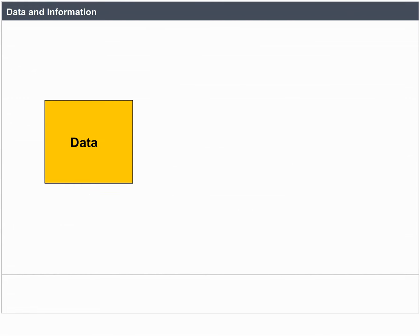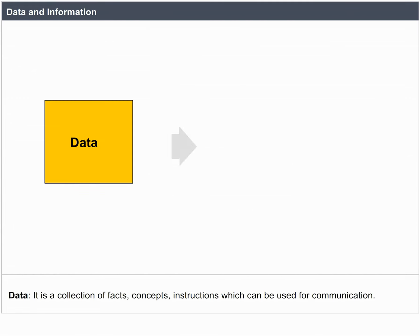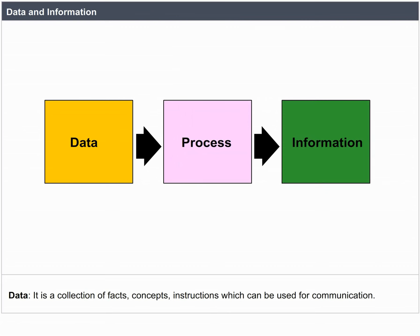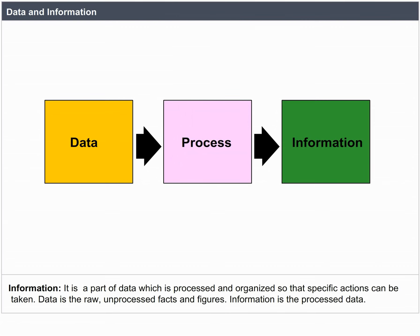Data and Information. Data is a collection of facts, concepts, and instructions which can be used for communication. Information is a part of data which is processed and organized so that specific actions can be taken. Data is raw, unprocessed facts and figures, whereas information is processed data. Data is not specific, whereas information is specific. Data is the input to a system, whereas information is the output.